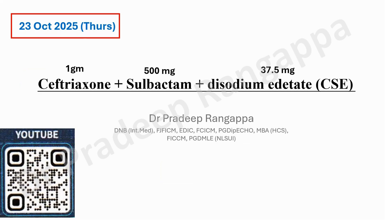The composition is ceftriaxone — which most listeners would be using regularly — at one gram, and sulbactam at 500 milligrams. I have to make the claim that sulbactam at 500 milligrams is a very suboptimal dose.